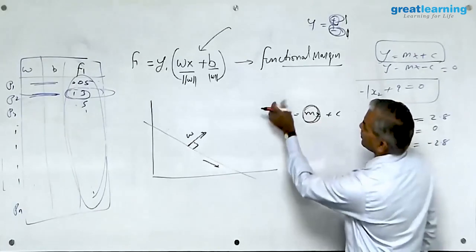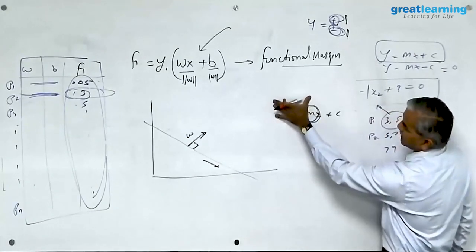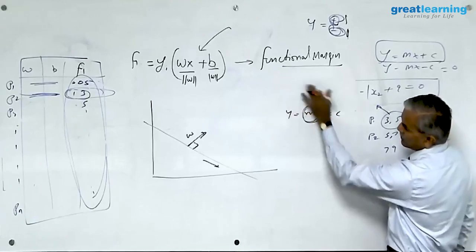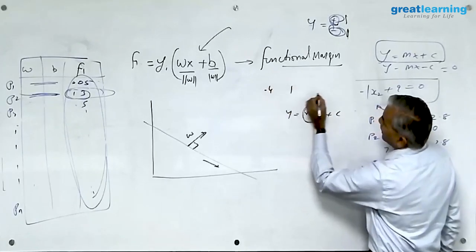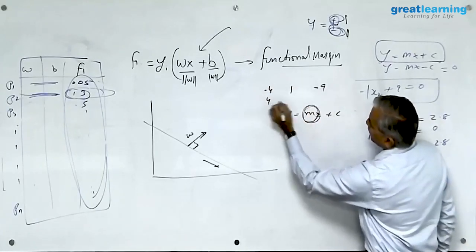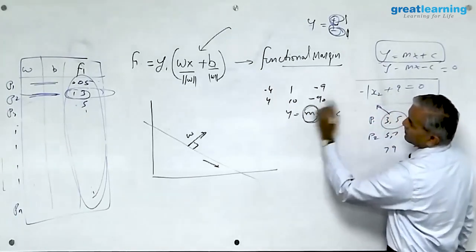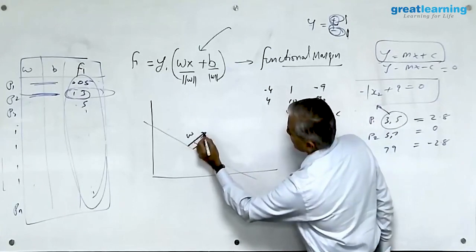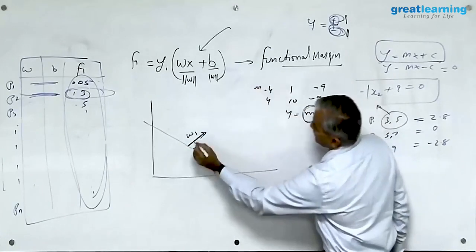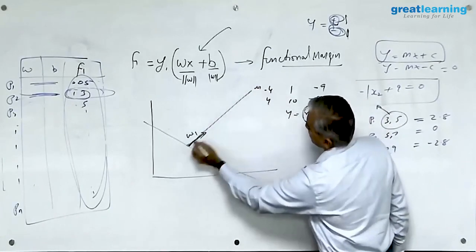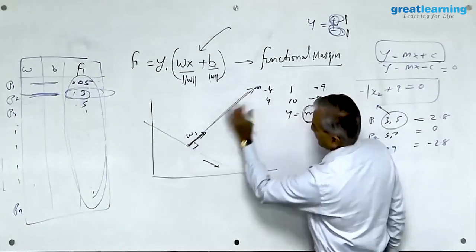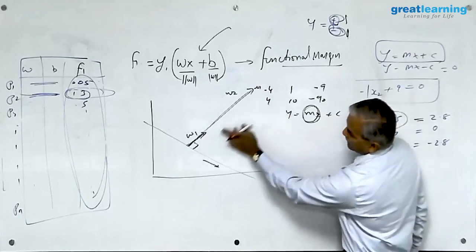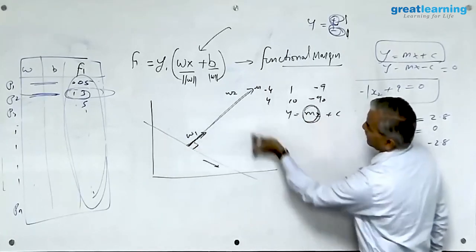I showed you two expressions, one was larger scale, one smaller scale. The only difference between these two expressions which I showed you, 0.4, 1, and minus 9 versus 4, 10, and 90. The only difference between these two equations is geometrically this is w1, this will be w2, same vector scaled up, but both of these vectors show the same line.